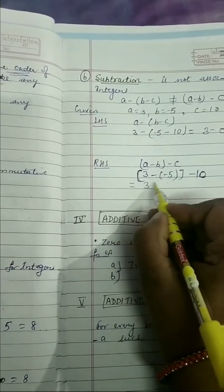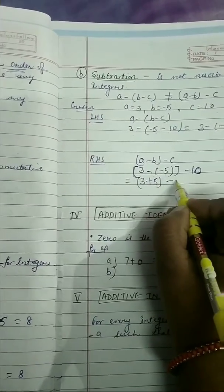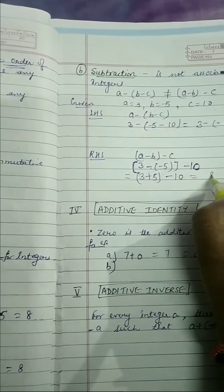Then 3 minus minus 5 equals 8, minus 10.